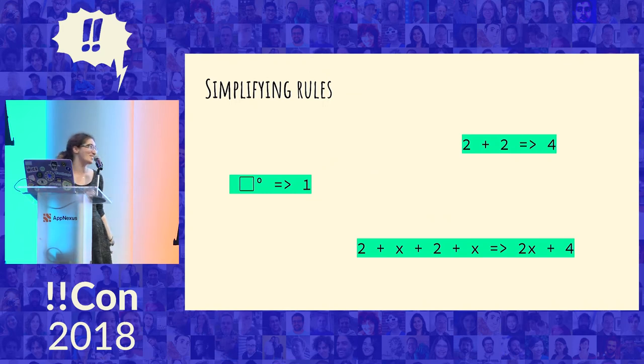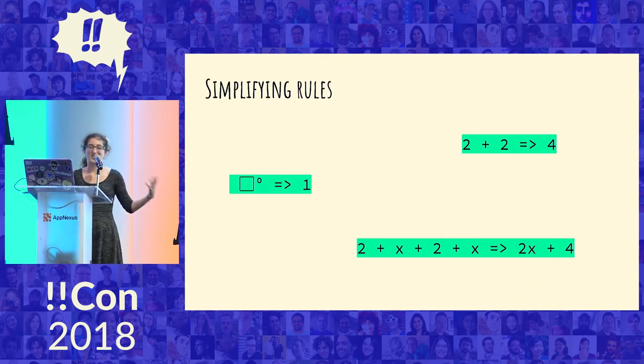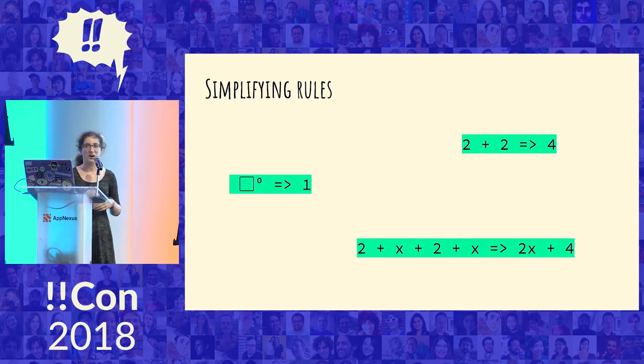So here are some examples of simplifying rules. So like something to the zero becoming one or adding two numbers together, or adding the bottom is like collecting, combining like terms. There's a whole bunch of these.